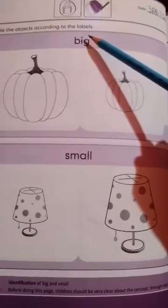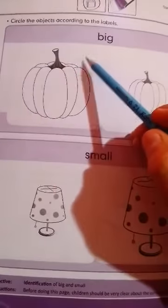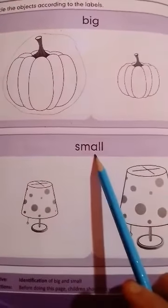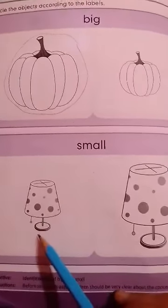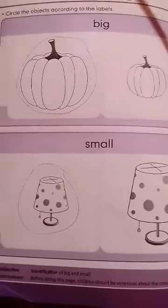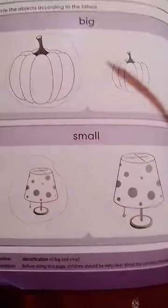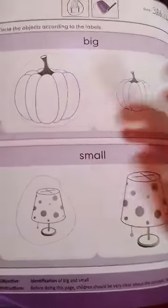First we will read the icons: circle and color. On this page we have to circle and color. Today's object is big and small. A pumpkin is given — big and small. We have to circle the big one, so all children pick up your pencil and draw a circle on the big one. Now look below — the next object is small. Two lamps are given, one small and one big, but we have to circle the small one. After circling, remember: choti cheez ko small kehte hain aur badi cheez ko big. Big, small.